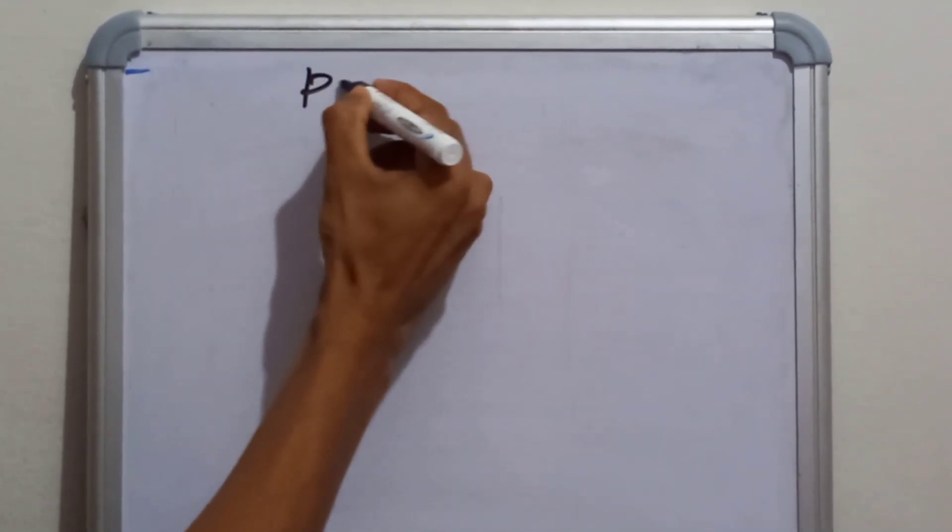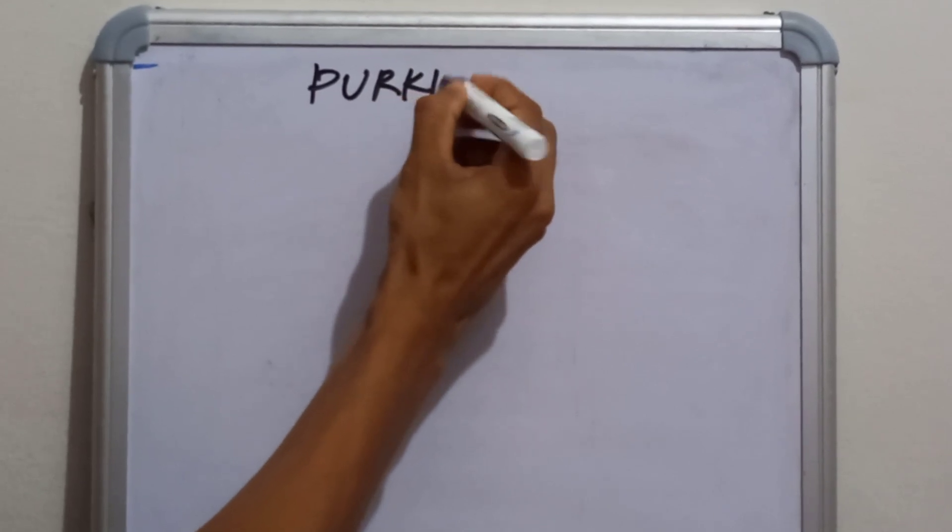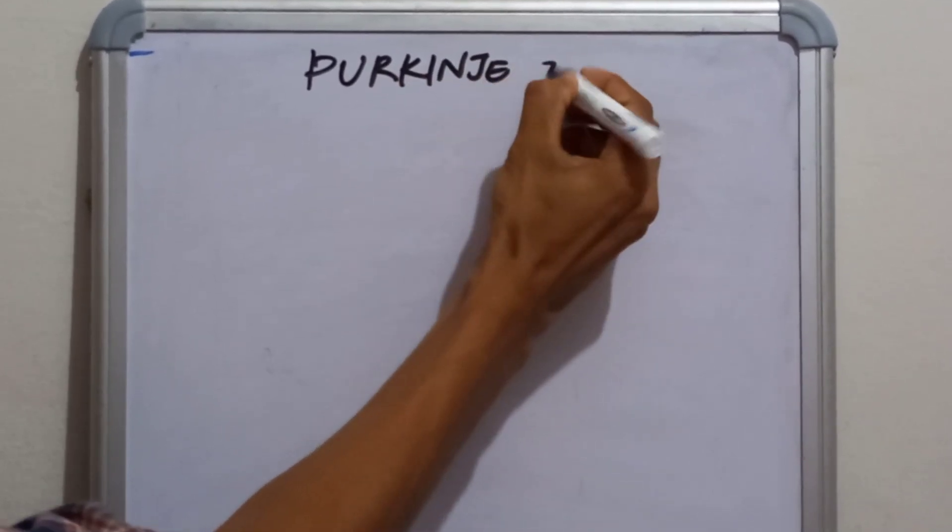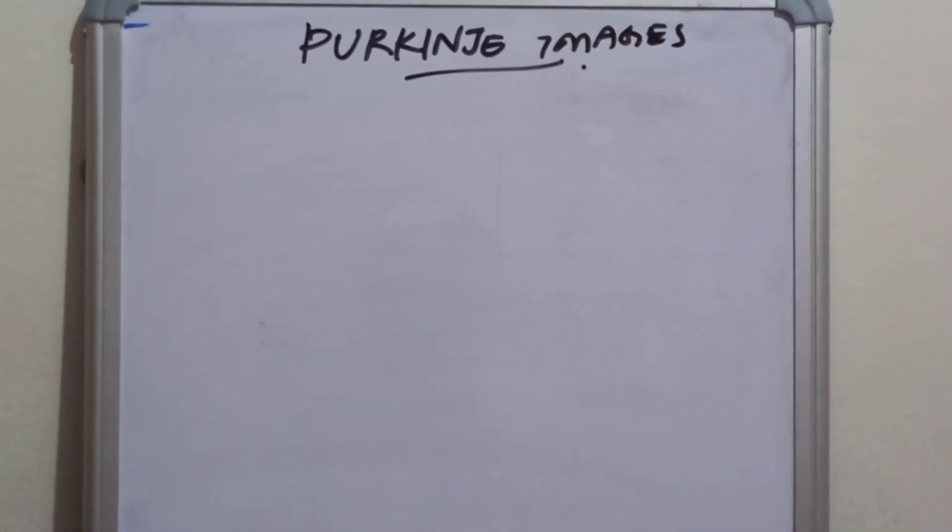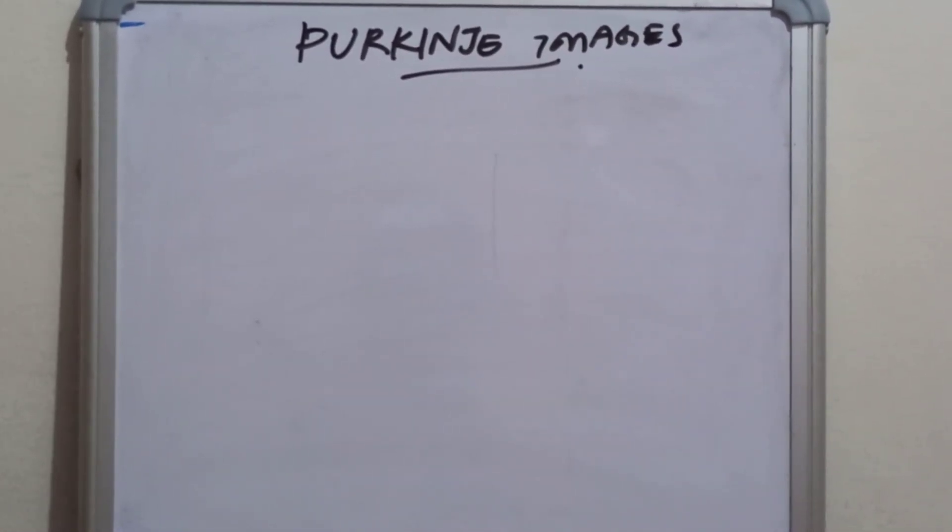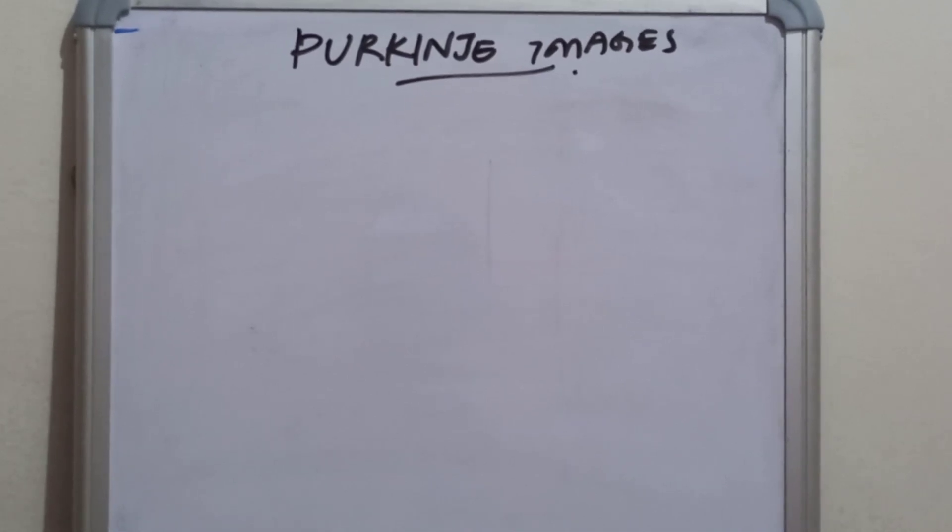Hi everyone, today we are going to discuss the Purkinje images. So as you all know, the Purkinje images are formed from the different refractive surfaces of the eye.